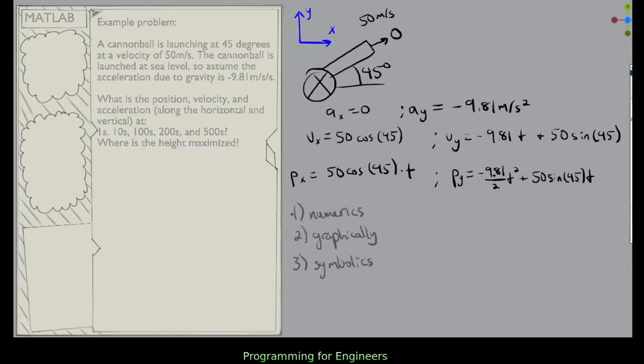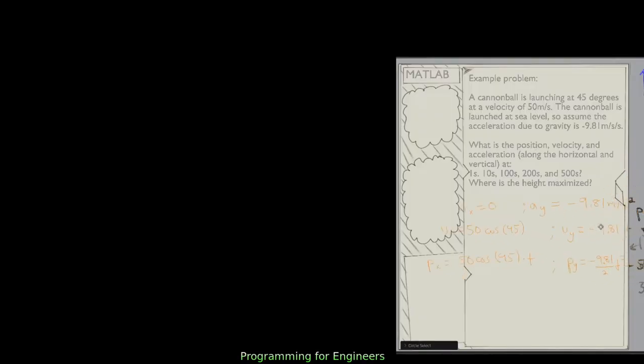So let's look at the numeric. If I want the position at 1 second, I can just get the position in x at 1 is 50 cosine of 45 times 1. So I can go and view the position at 1, 10, 100, 200, 500, just plugging in times. So we'll duplicate this in MATLAB.